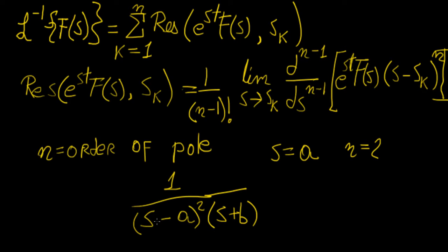We know that (s minus a) squared is the same as (s minus a) times (s minus a), and because it's the same pole, we just call it a pole of order two. The other pole is of order one, because the power attached to it is just one, and it occurs at s equals minus b, so n equals one. These points are what we choose as our fixed points s_k.